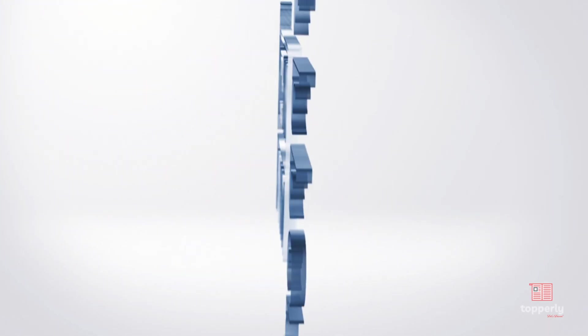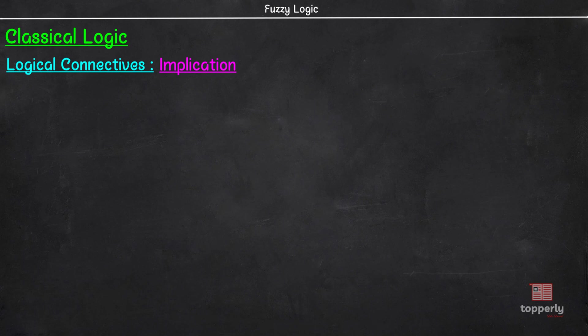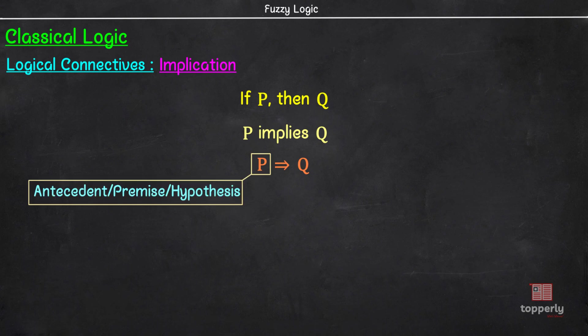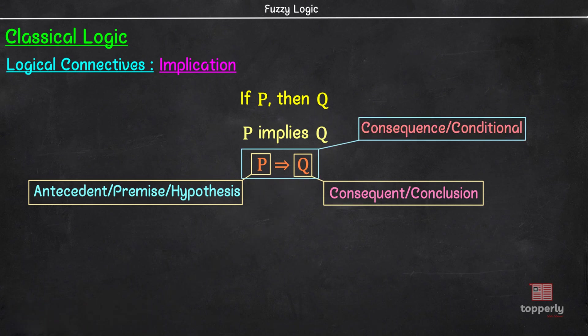Let us start our lecture. Mathematical propositions of the form 'if P then Q' are called implications. Another way of saying implication is 'P implies Q.' The implication connective is represented in propositional logic with this sign. Here, the proposition P is called the antecedent, premise, or hypothesis, and the proposition Q is called the consequent or conclusion. Also, the statement as a whole is called either the conditional or the consequence.